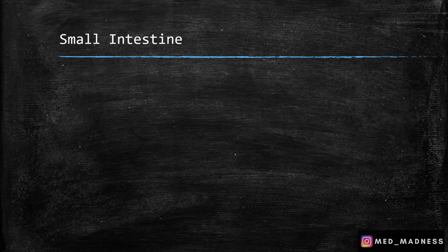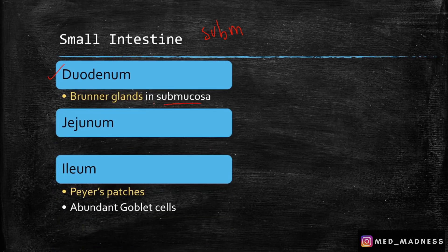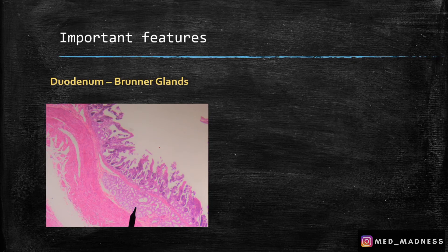The crypts of Lieberkühn are important because they contain stem cells and Paneth cells. The stem cells help in regeneration of cells, and Paneth cells help with secretions that protect the GI wall. Now I'm going to cover the different parts of the small intestine: duodenum, jejunum, and ileum. The general feature is villi, but to differentiate between these three, you look into the submucosa. In the duodenum, you can see Brunner's glands in the submucosa; in the ileum, you can see Peyer's patches.